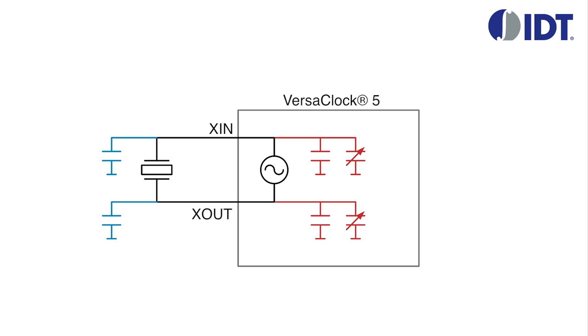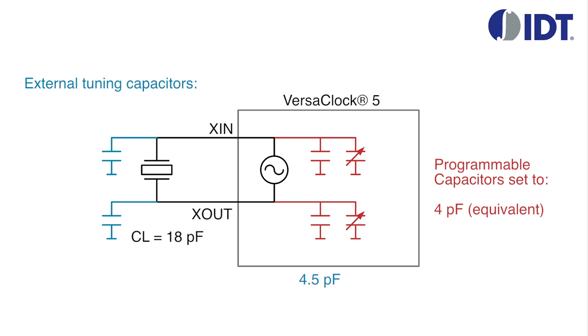Let's consider the following example. CL is 18 pF. The internal fixed capacitors of the VersaClock 5 are, as we know, 4.5 pF equivalent. And the internal variable capacitors have been set to an equivalent value of 4 pF. The external capacitors need an equivalent value of 18 minus 4.5 minus 4, which is 9.5 pF. This translates to an individual capacitance of 19 pF for each capacitor.